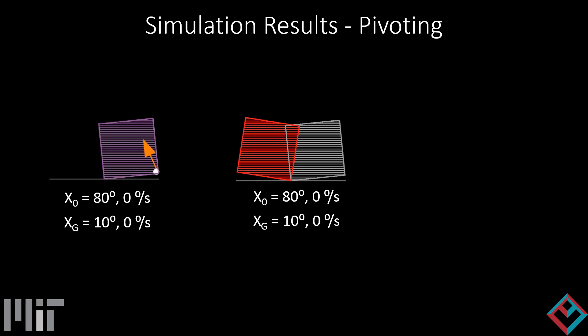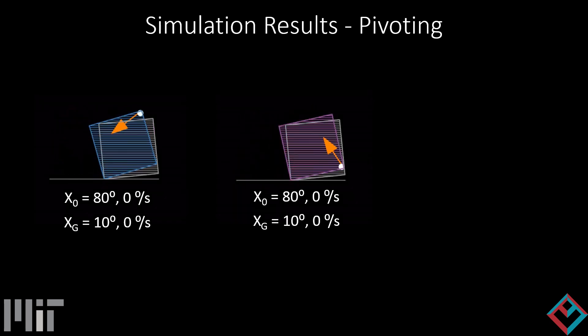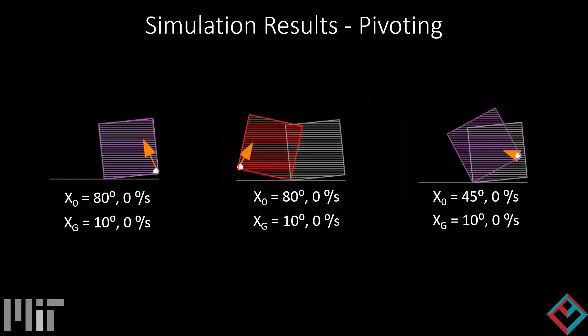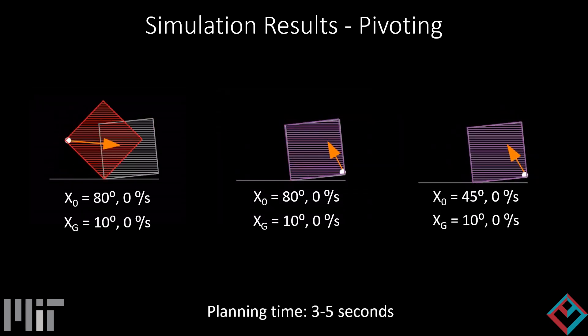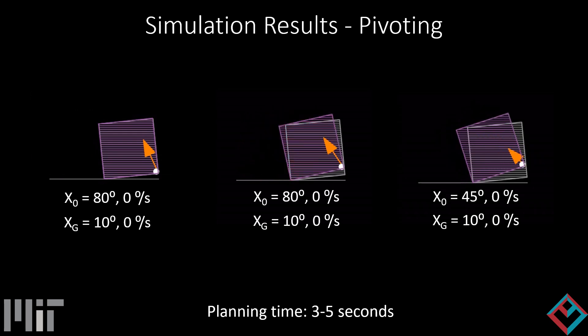From the same initial condition, we can also leverage the inertia of the object to find a trajectory with only one contact switch. Finally, we present ablation studies in the paper and find that a planning time of three to five seconds is sufficient to find a trajectory for most initial conditions.